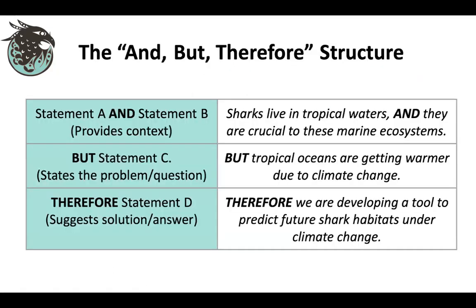I want to turn this over to Anna because she has another way of phrasing this that I quite love. Thanks, Martha. I just wanted to throw in a couple of extra slides to go over one of the many ways that you can structure an abstract. I find this method to be really intuitive and easy to remember. It's called the and-but-therefore structure — a sequence of statements you might use. First, you provide context — that's the 'and' part — where you put two ideas together.